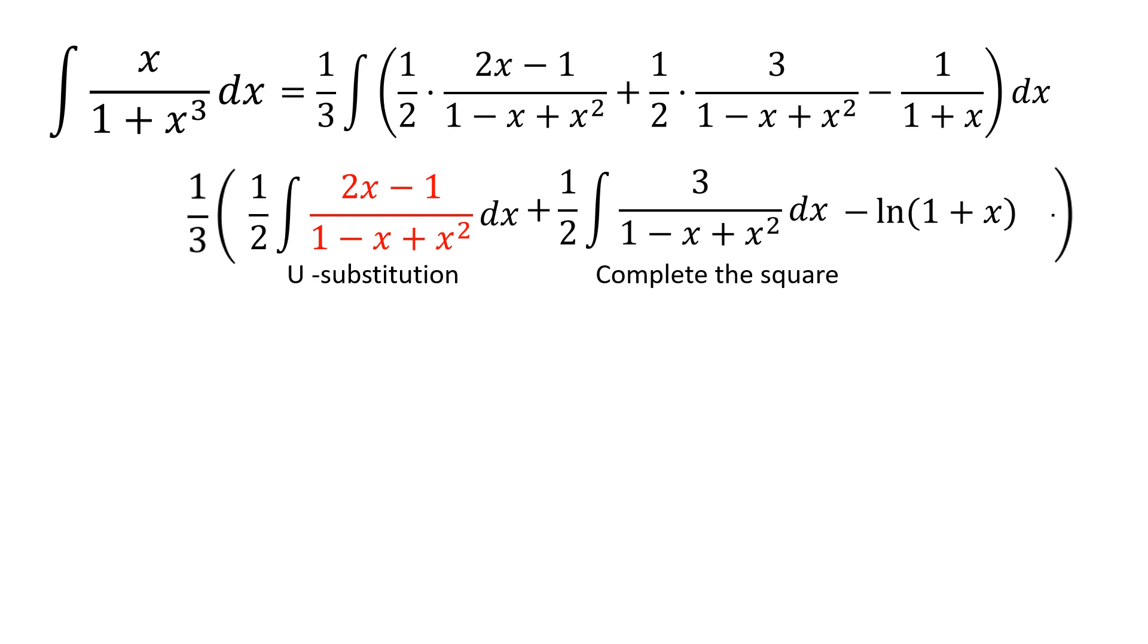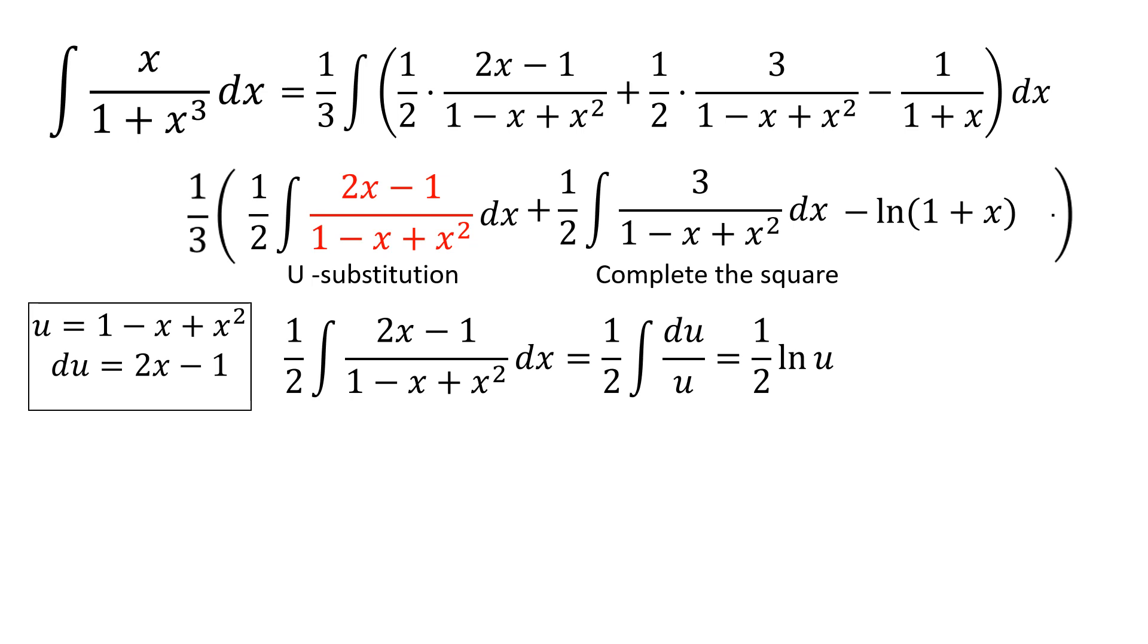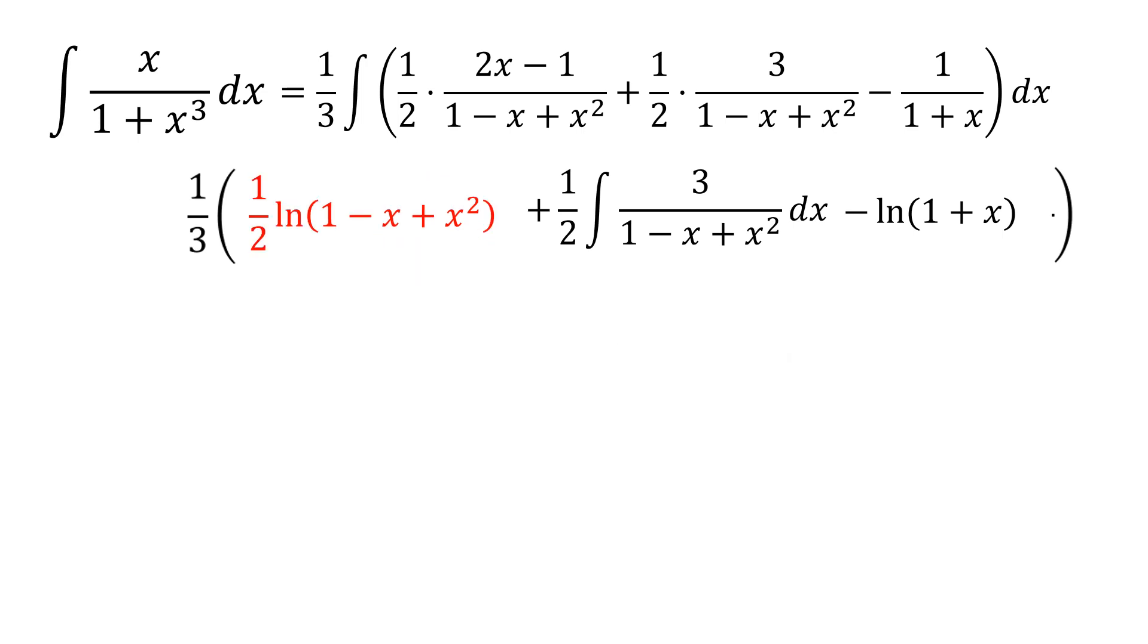Now let's direct our attention to the first integral. As I said, we will solve this by u substitution. As we did before, we will allow u to equal 1 minus x plus x squared and du to equal 2x minus 1. This means that the integral is equal to 1 half times the integral of 1 over u du, which is simply 1 half times the natural log of u. Since u is equal to 1 minus x plus x squared, I have to substitute this in place of u and I will get that the integral is 1 half times the natural log of 1 minus x plus x squared.